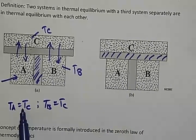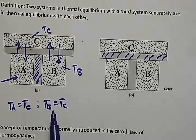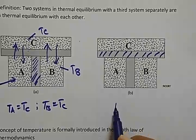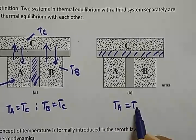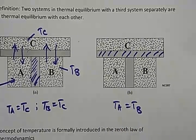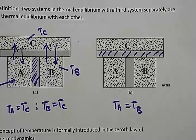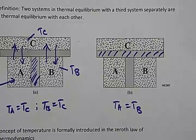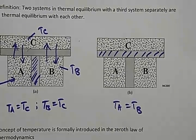Mathematically, if Ta equals Tc and Tb equals Tc, then Ta equals Tb. So there is no need for heat to flow, because both A and B are at the same temperature — there is no temperature difference between them.